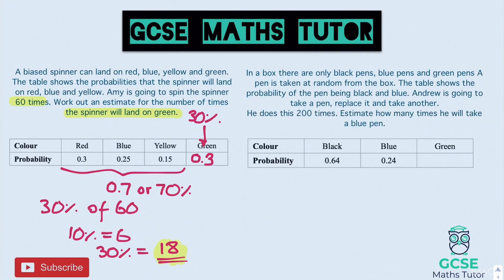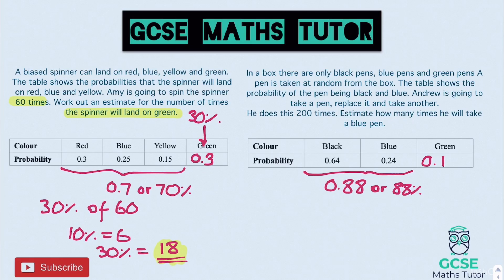For the second question, we find the missing decimal. The given probabilities total 0.88, so we're missing 0.12, or 12%. However, the question asks about blue, not the missing colour. Blue is 0.24, which is 24%, and Andrew does this 200 times, so we need 24% of 200.